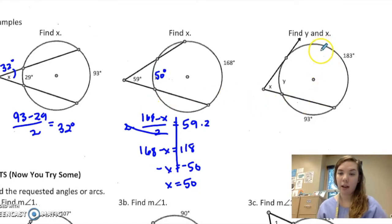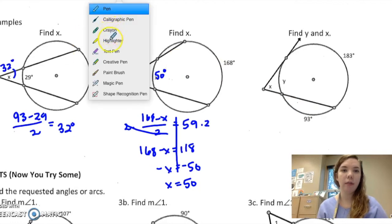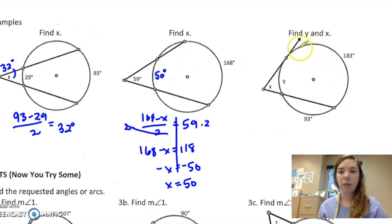Alright, find y and x. So it looks like I need to find y first because I know these two arc measures, so I can find this one by taking those from 360. So I have 360 minus 93 and 183 is 84.